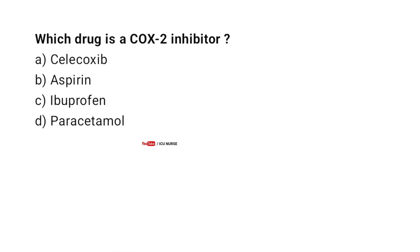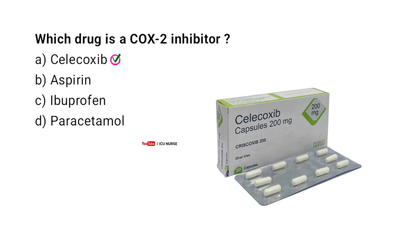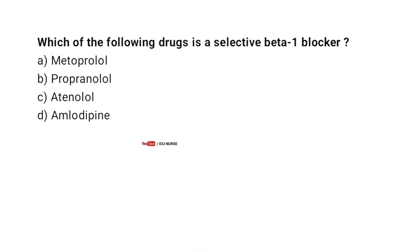Which drug is a COX-2 inhibitor? Correct answer A. Celecoxib. Which of the following drugs is a selective beta-1 blocker?